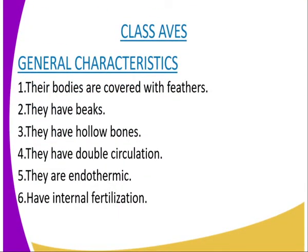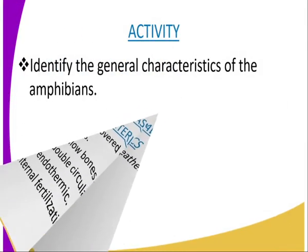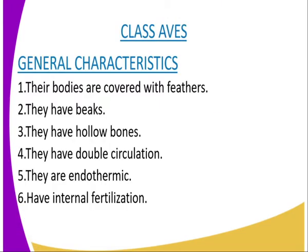We can have our last class, which is class Aves, and this class comprises the birds. Examples of birds include the chicken, the dove, the weaver bird, hawks, eagles, and the turkey. Now we are going to discuss the general characteristics of all birds.